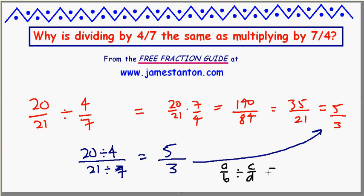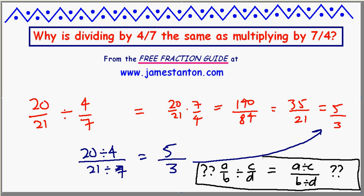Is it true in general that a-bths divided by c-dths is actually a divided by c over b divided by d? Did I just choose some numbers which by coincidence happen to work this way? Or is this true in general? Homework question number one.